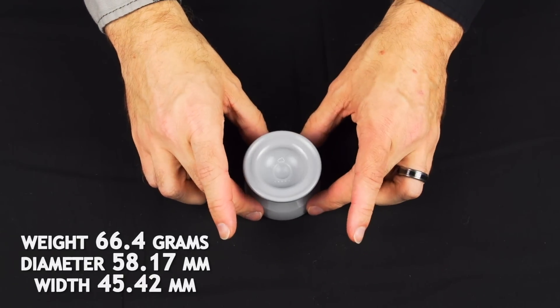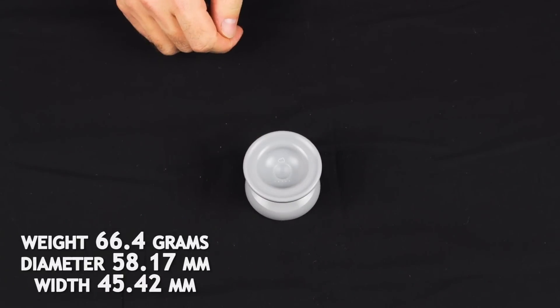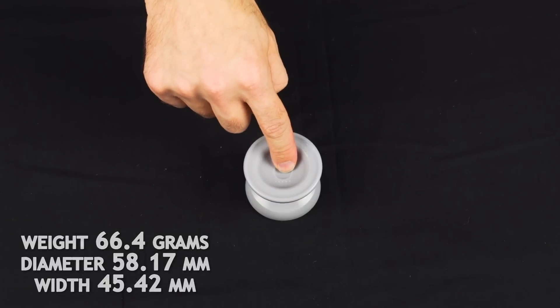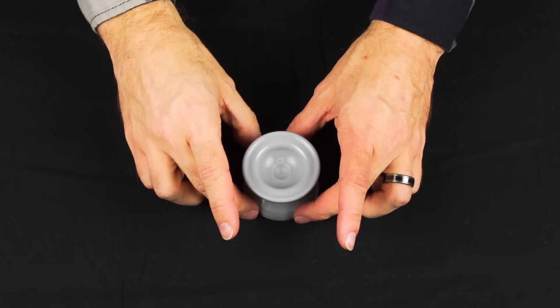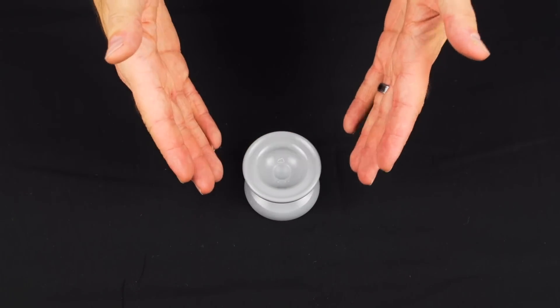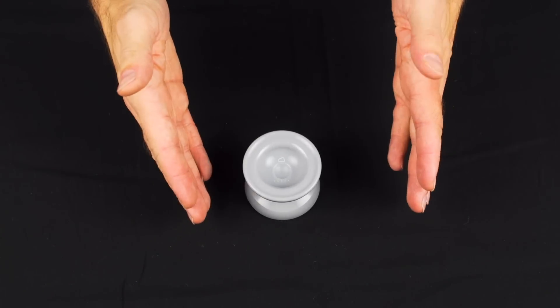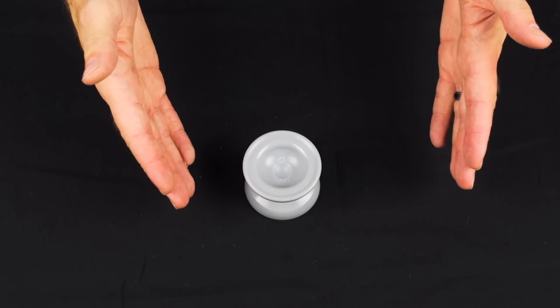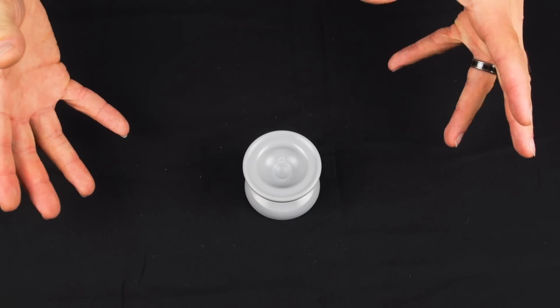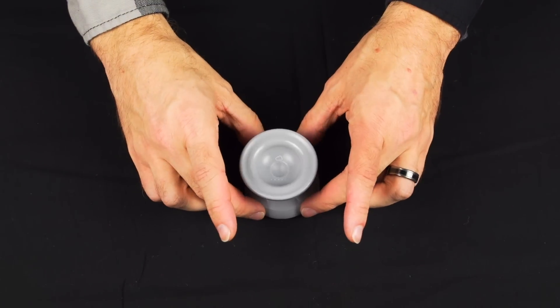The first thing that you will notice when you look at the Skyba is this little dimple on the inside, and that was designed specifically for finger spins. This is one of the best implementations that we have ever seen in any yoyo of finger spin design. It is really easy to use, but it is also really dynamic, so you can do a lot of different types of tricks with it.